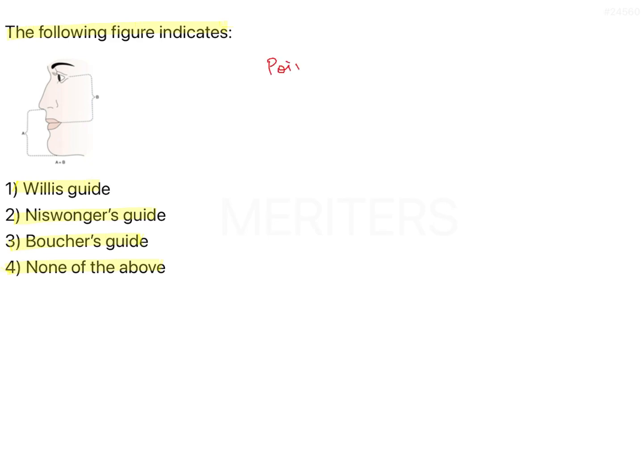There are two points, point A and point B. Point A is from the anterior nasal spine to the chin, deepest point on the chin, highest point on the chin. And point B is from corner of the mouth to outer canthus of eye. Now here it's written A is equal to B.